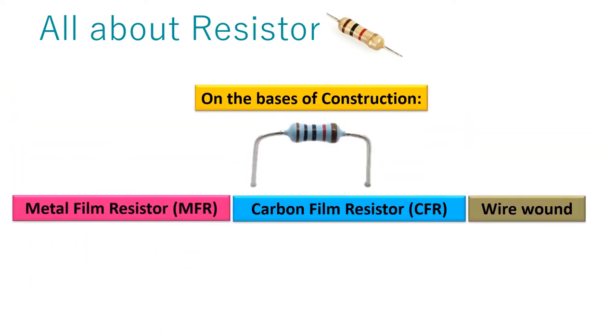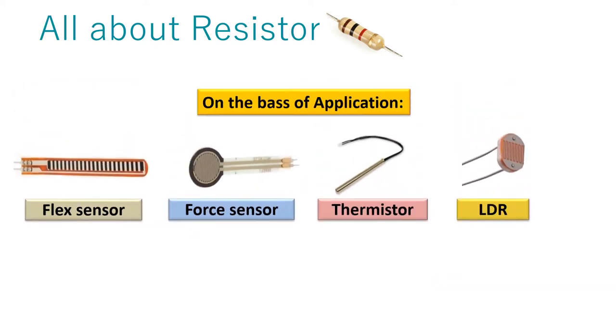On the basis of construction, metal film, carbon film and wire wound resistor. These sensors are also a form of resistor, they change their resistance when the temperature is changed, or when the force is applied or when it is folded.